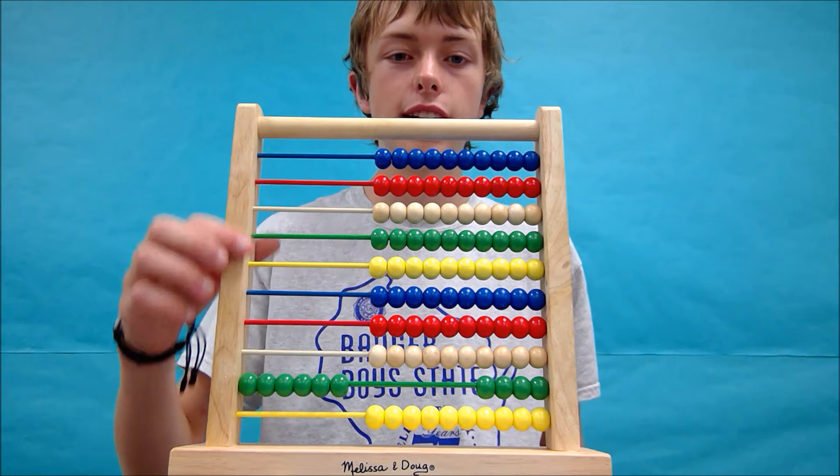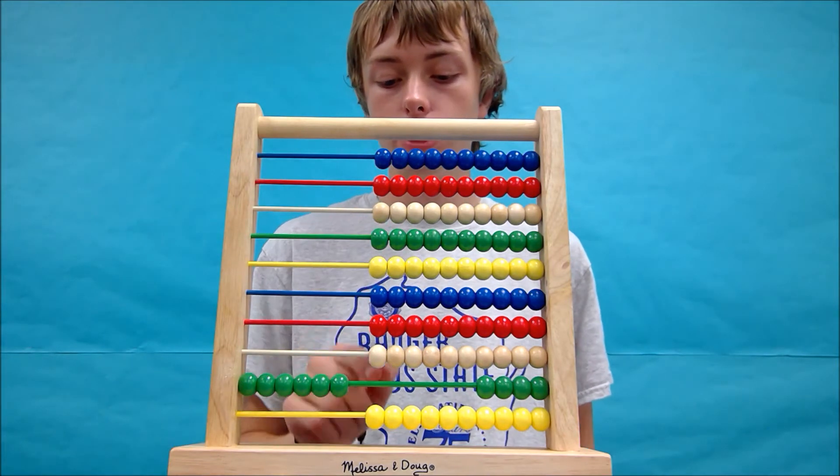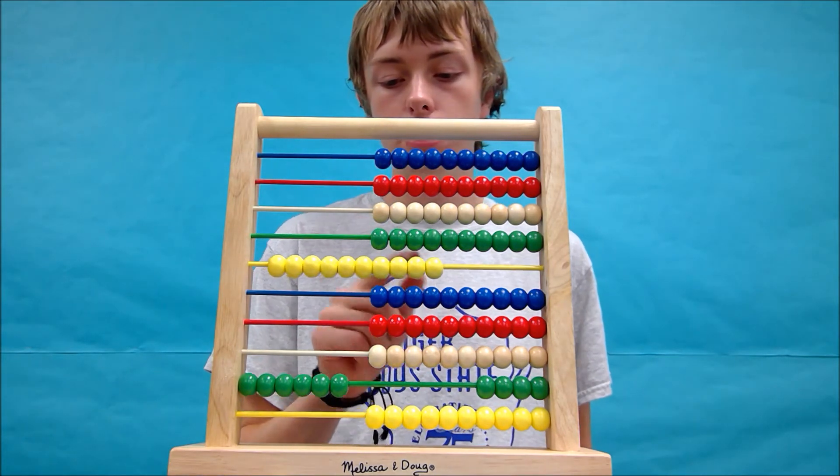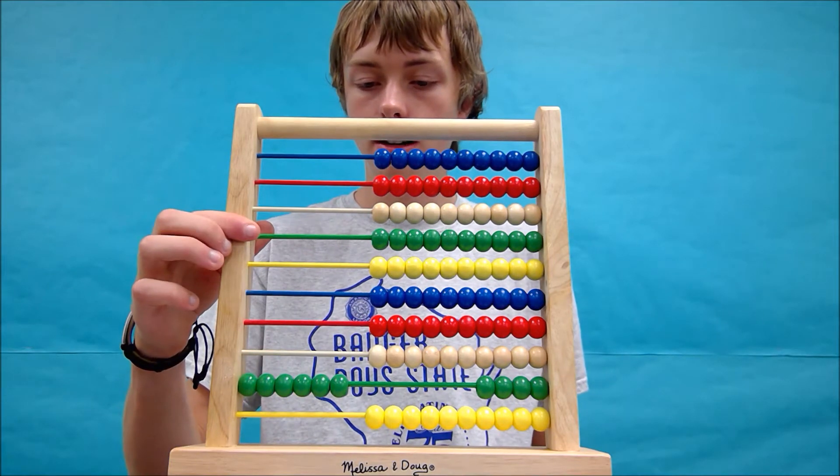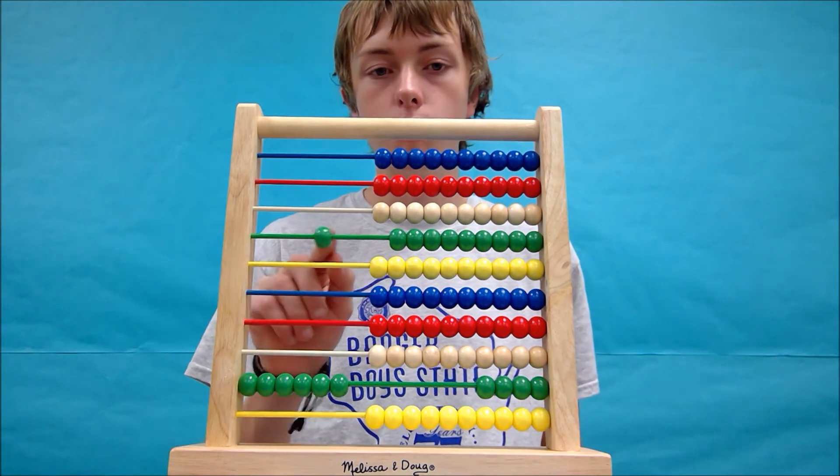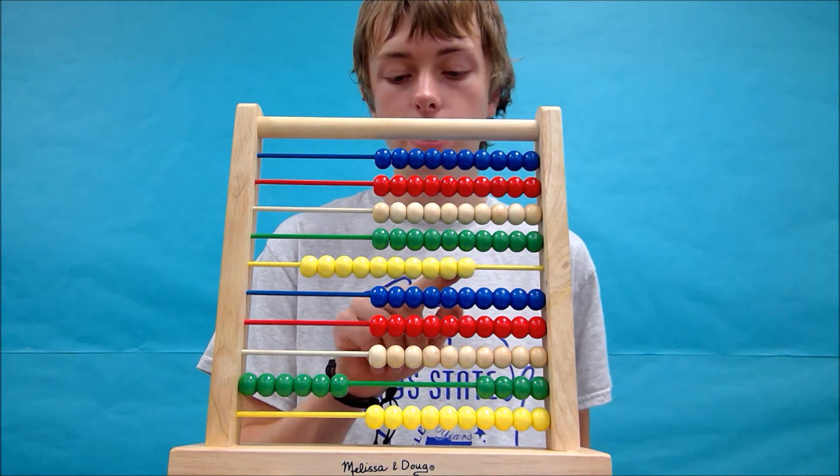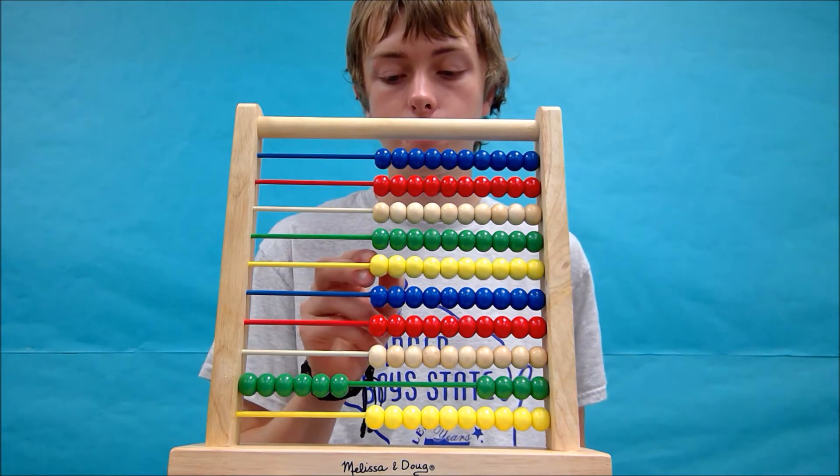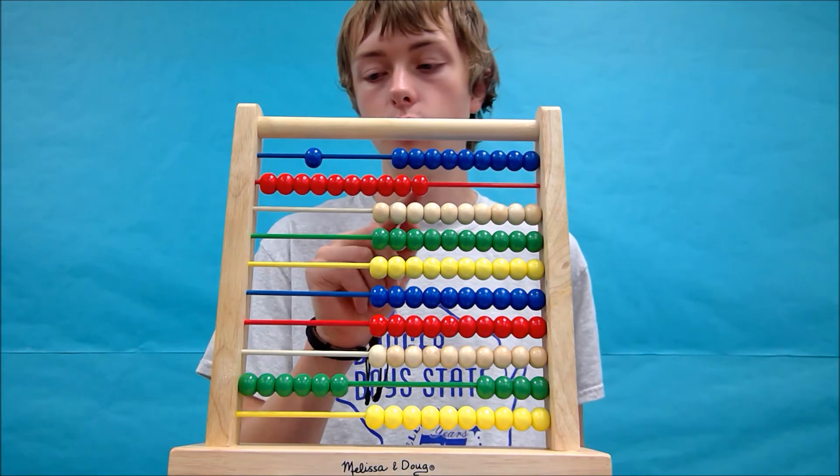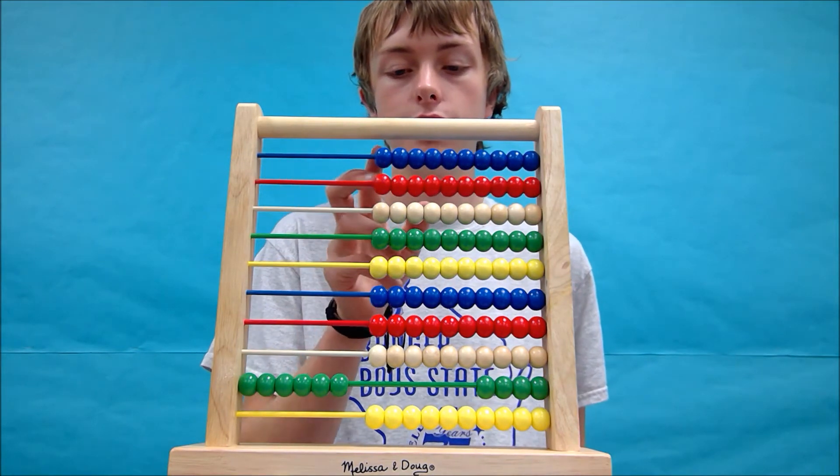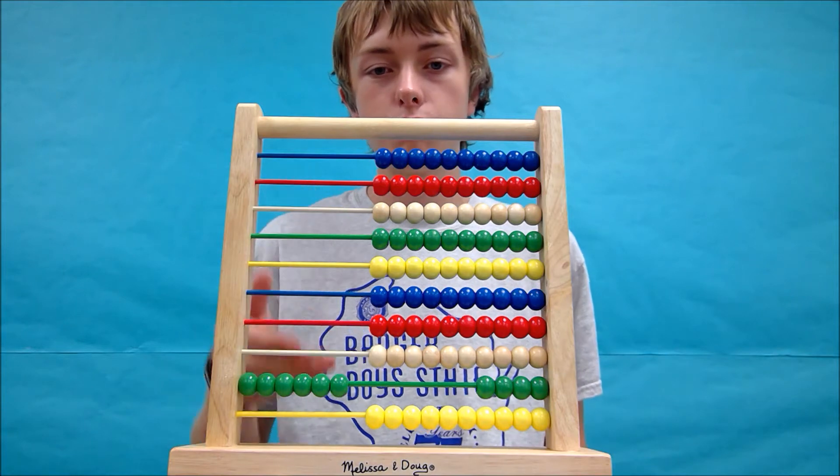This principle applies anywhere on the abacus. So even up here, 10 yellow beads equals one green bead. Or this would be our millions row, 1 million equals 10 100 thousands. And the same up here, 1 billion equals 10 100 millions. So that's just the principle.